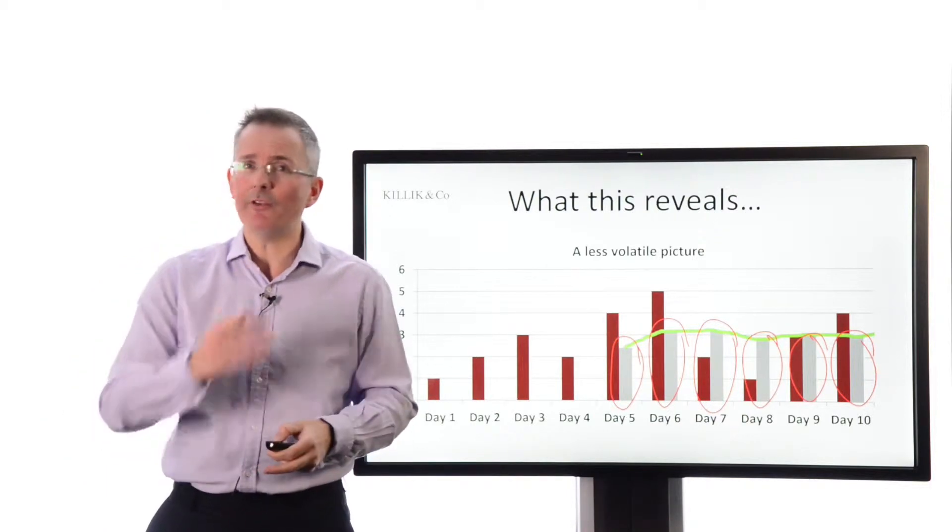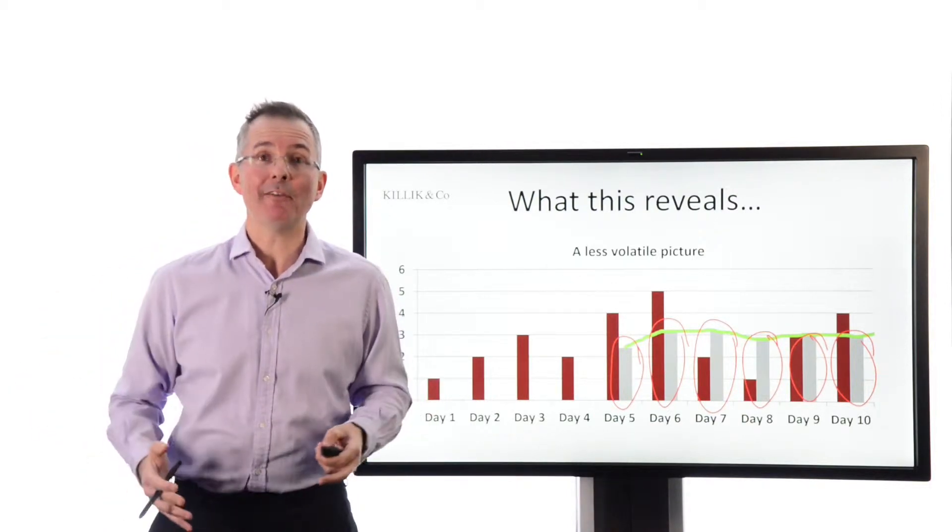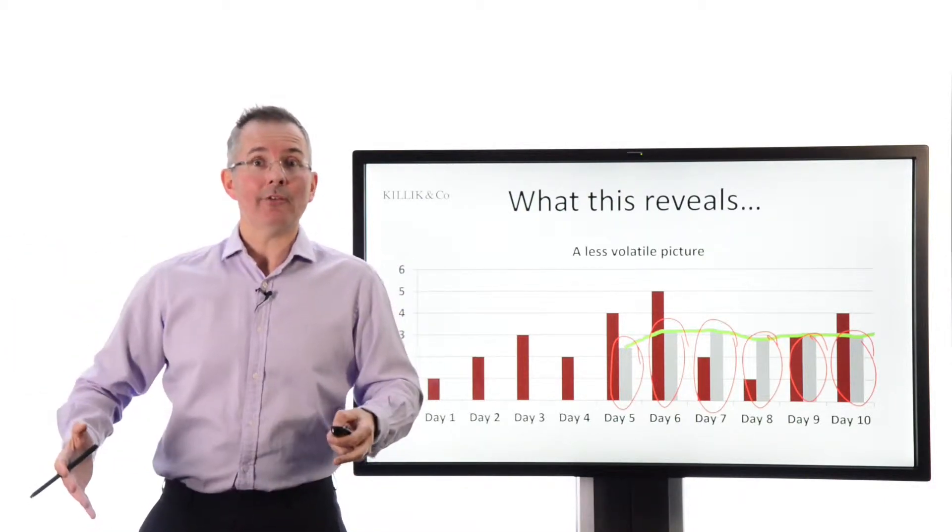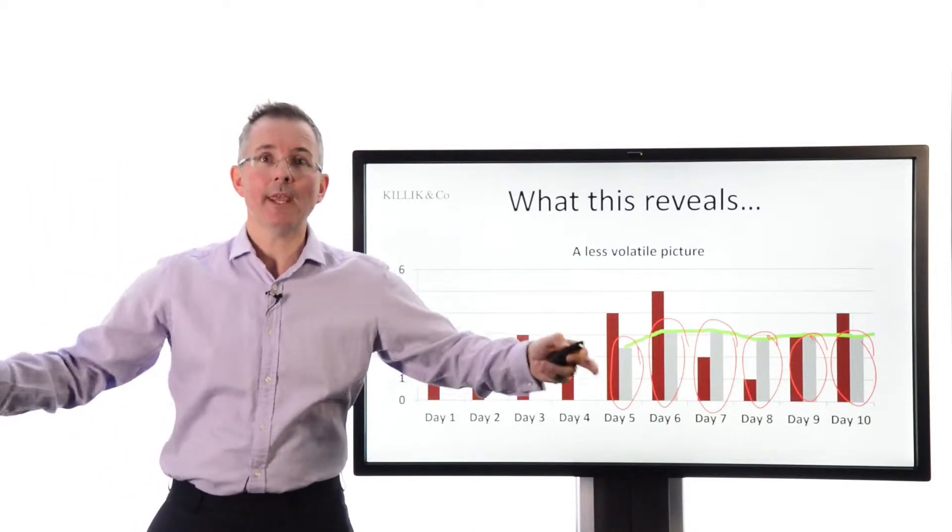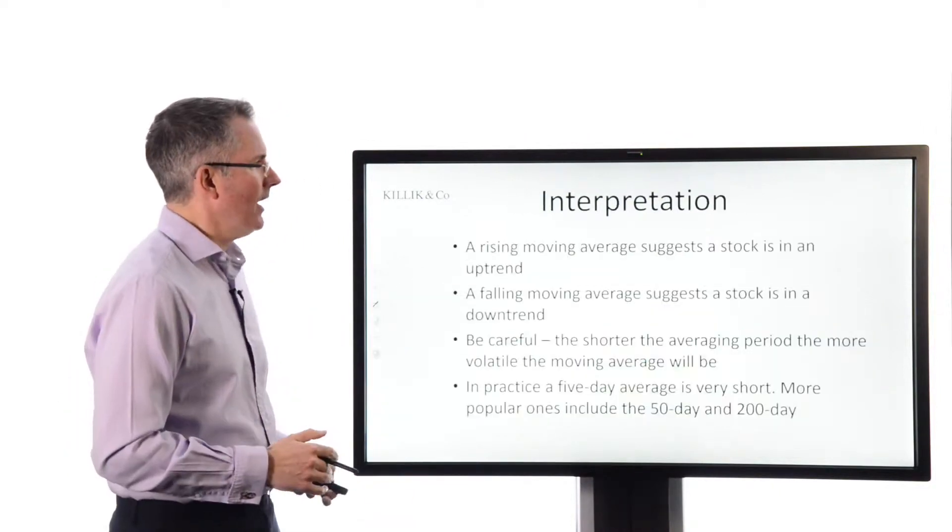In practice, five days is very short. The market, if you're looking at big indices, like the S&P 500, for example, will tend to look back over 50 days, even that's considered quite short-term, or 200 days to get the kind of bigger picture, almost primary trend, if you like.